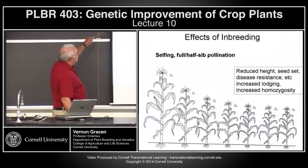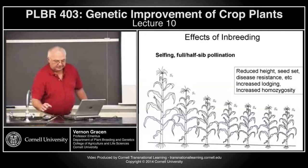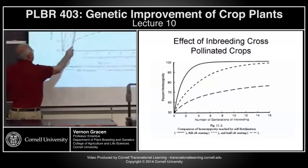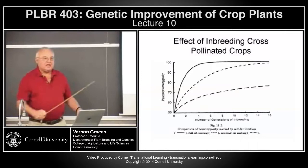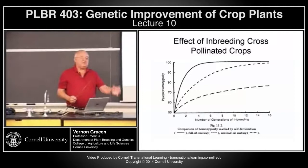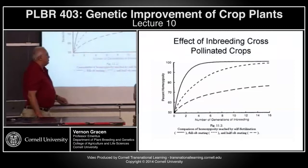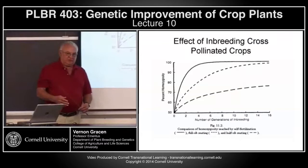This inbreeding depression: you start with that original open-pollinated variety, and each generation of selfing produces smaller and smaller plants. If you self, you get very rapid inbreeding depression. If you utilize a full-sib mating design — identifying two sister plants and crossing them together — you get a bit more slowly to inbreeding. If you're using half-sibs, where you're not controlling the pollination and there's a mixture of pollen coming in, you get a slower degree of inbreeding depression. But all of these factors lead to inbreeding depression.